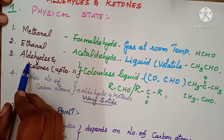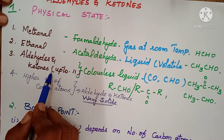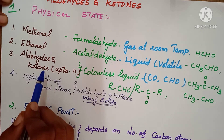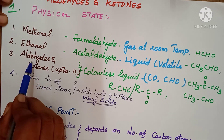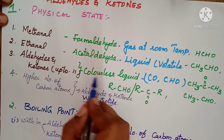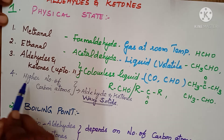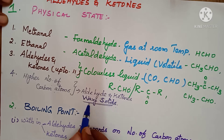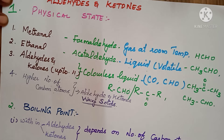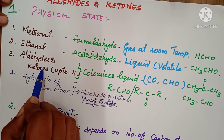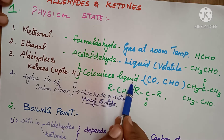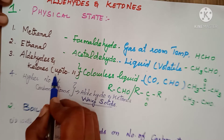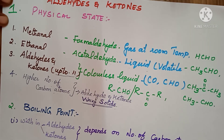Up to 11 carbon atoms — that is lower number of carbon aldehydes — aldehydes and ketones are colorless liquids. Higher number of carbon atoms means aldehydes and ketones are waxy solids. So, lower number means up to 11 carbons.